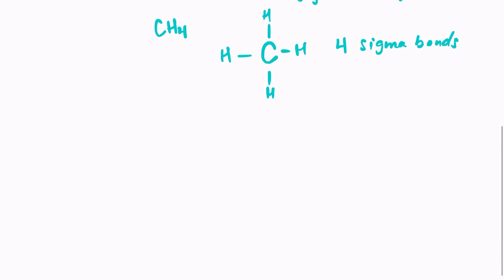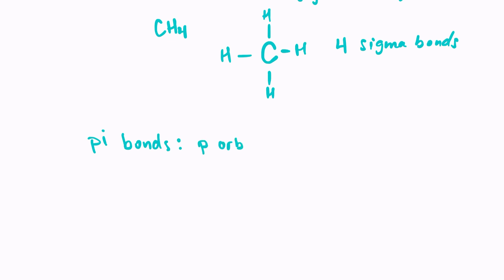Pi bonds are a little bit different. Pi bonds form when two p orbitals — only p orbitals — overlap sideways, or in the opposite direction of the bonding axis. Pi bonds are only between p orbitals, and they occur when p orbitals overlap sideways.